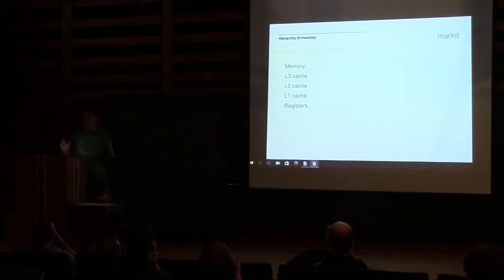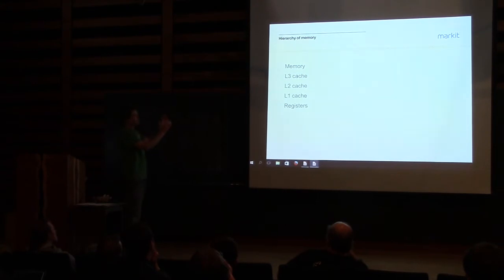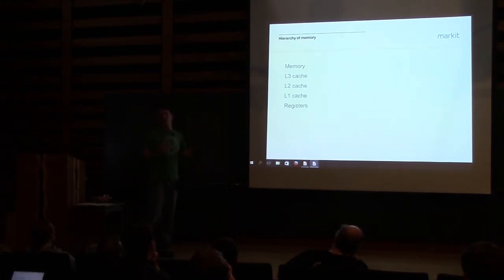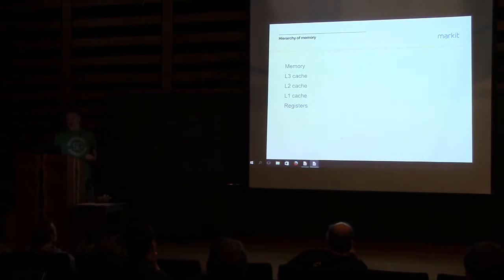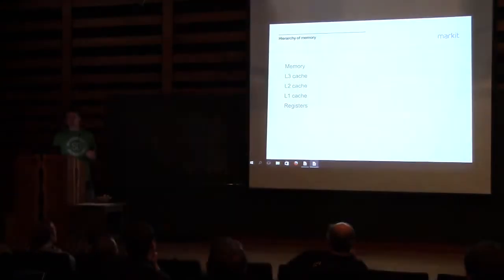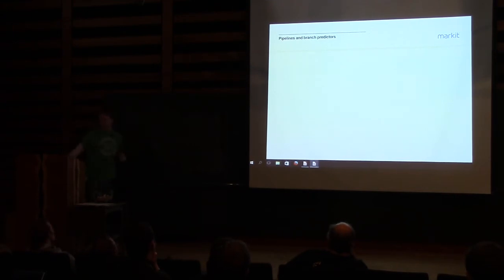If your data or your code can fit inside one cache level, and then you make it a little bit bigger so it can't, you can have very different performance profiles for a very small change. Modern hardware also has a pipeline and a branch predictor. The goal of the pipeline is to hide latency — rather than waiting five cycles for an instruction to finish, you execute the next instruction in parallel and the result becomes available later.